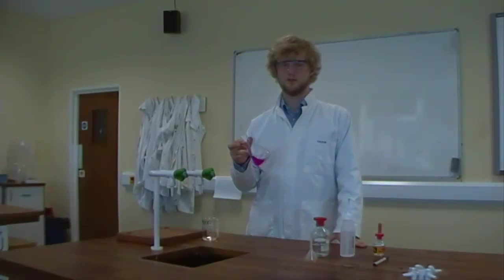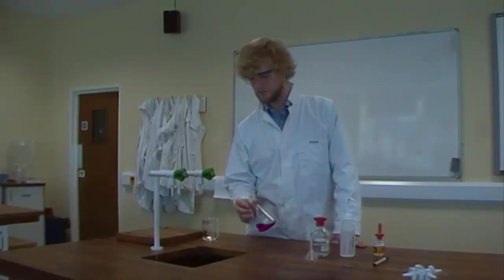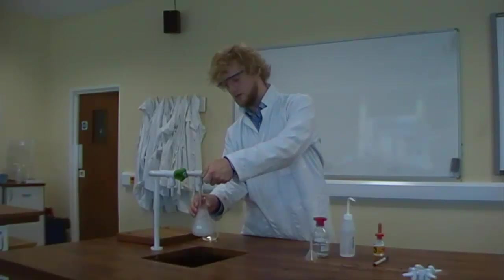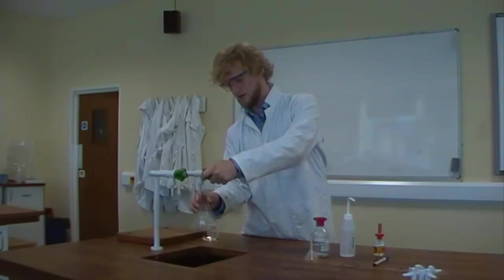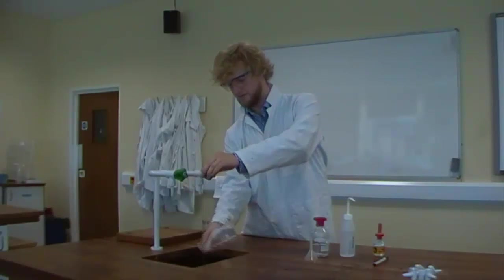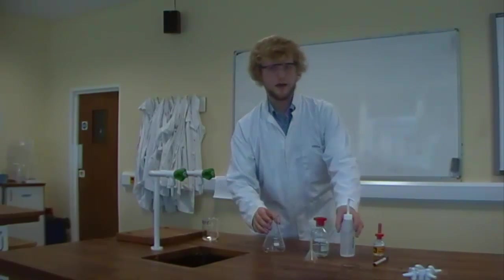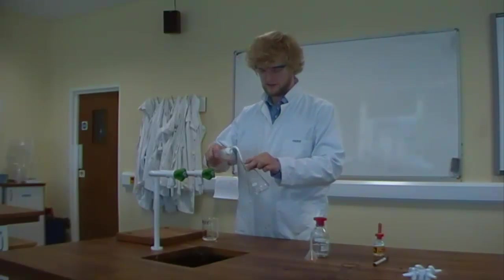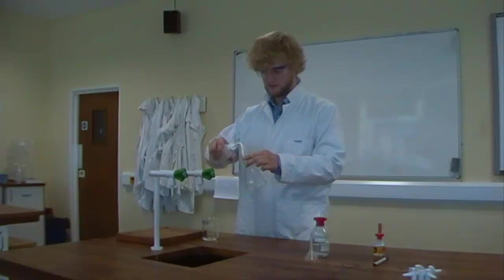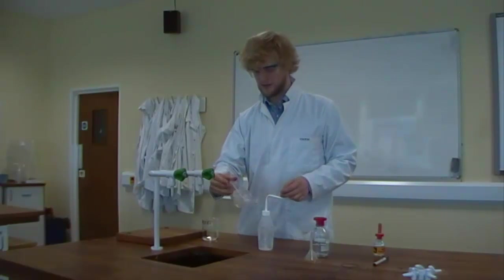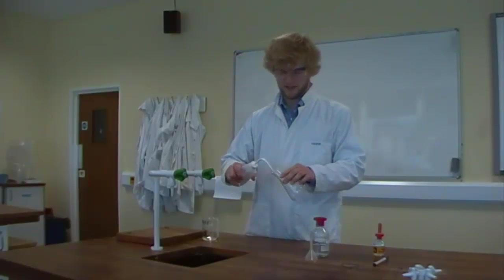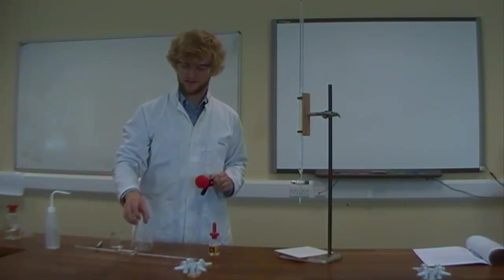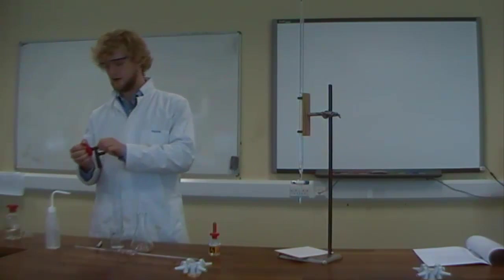Now it's important that we rinse out our conical flask really well. So I'm going to start us off just dunking that in the sink and then with a lot of tap water, make sure that it's fully rinsed out. Now, because tap water contains quite a few impurities, the next thing you want to do is rinse out the inside with distilled water. So give that a couple of rinses again with distilled water to make sure that it's completely clean.